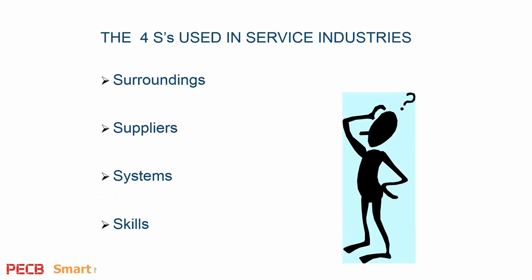The next set is four S's: surroundings, suppliers, systems, and skills — pretty self-evident. Just giving you some more variation of possible headers you might use to construct your diagram.